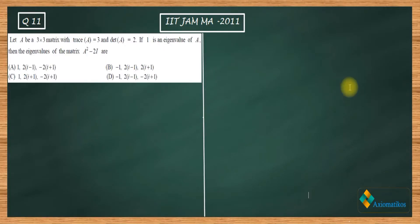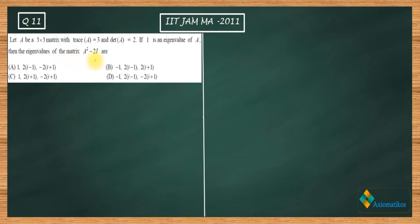Hello dear students. Welcome to ExeoMatic course. This video is part of the solution series for IIT JAM 2011. We are here with problem 11 of your paper. This is a linear algebra problem. Let A be a 3x3 matrix with trace of A equal to 3 and determinant of A equal to 2. If 1 is an eigenvalue of A, then the eigenvalues of this matrix are?